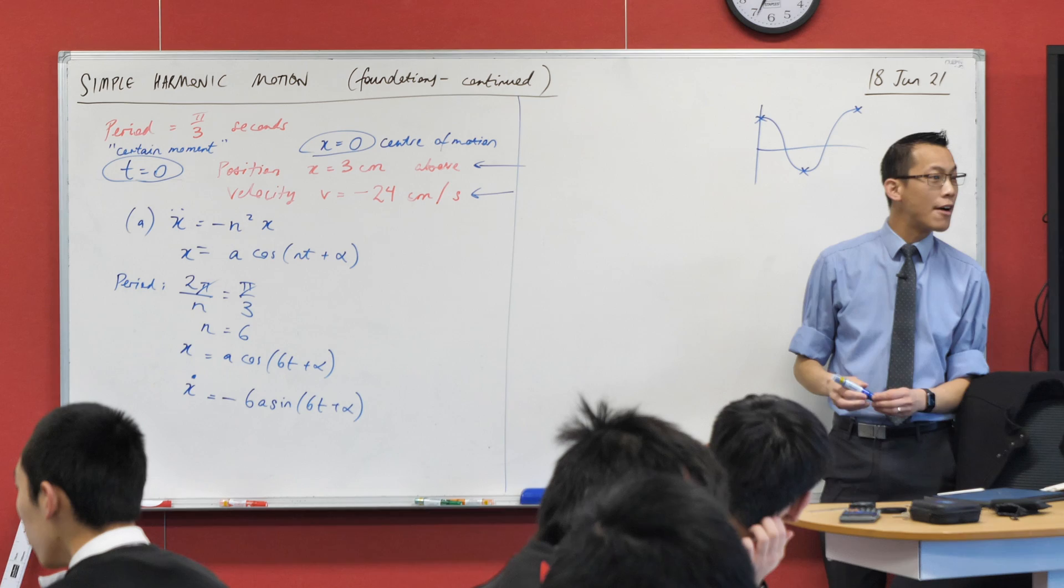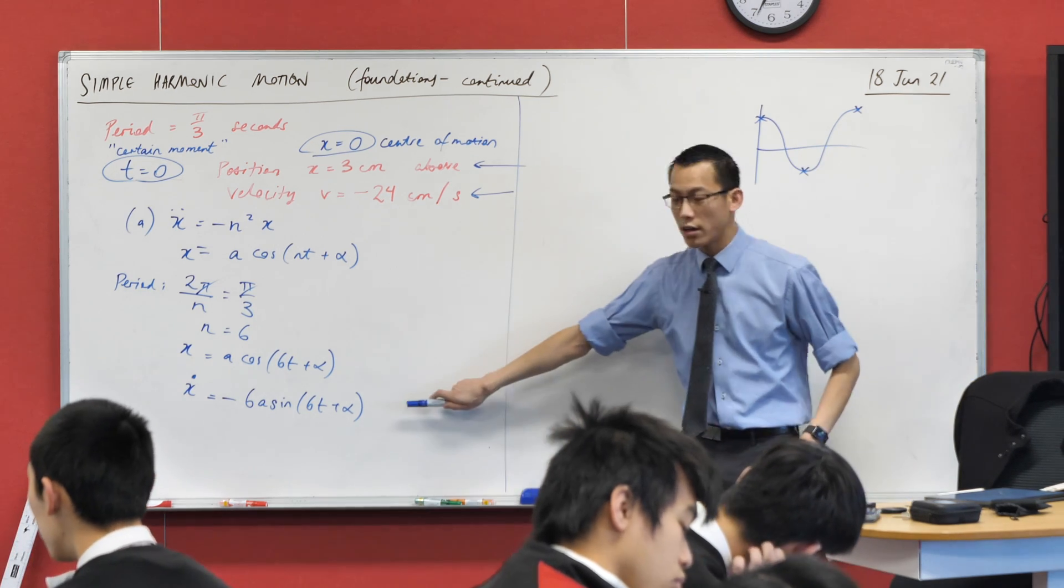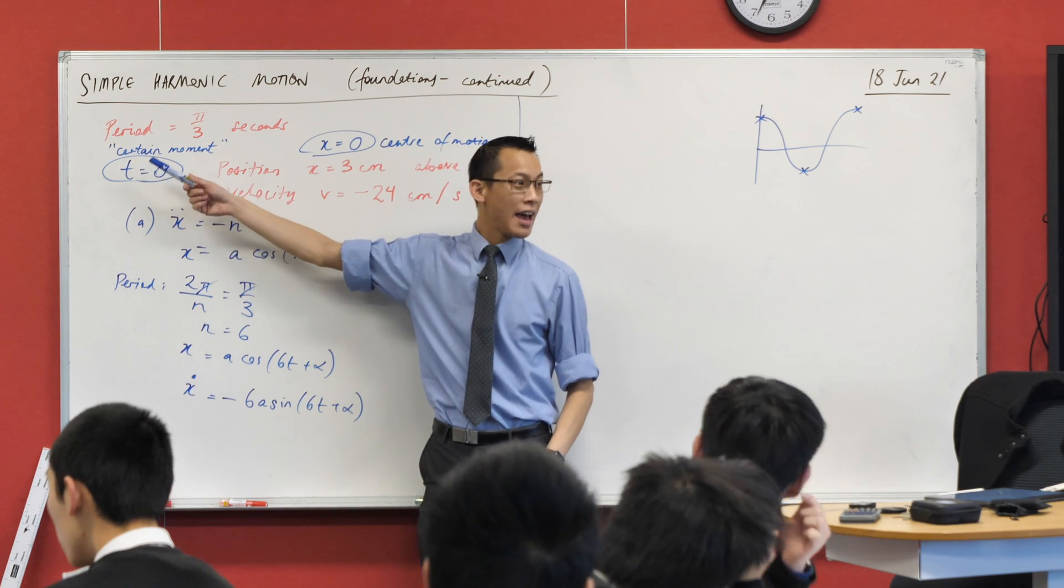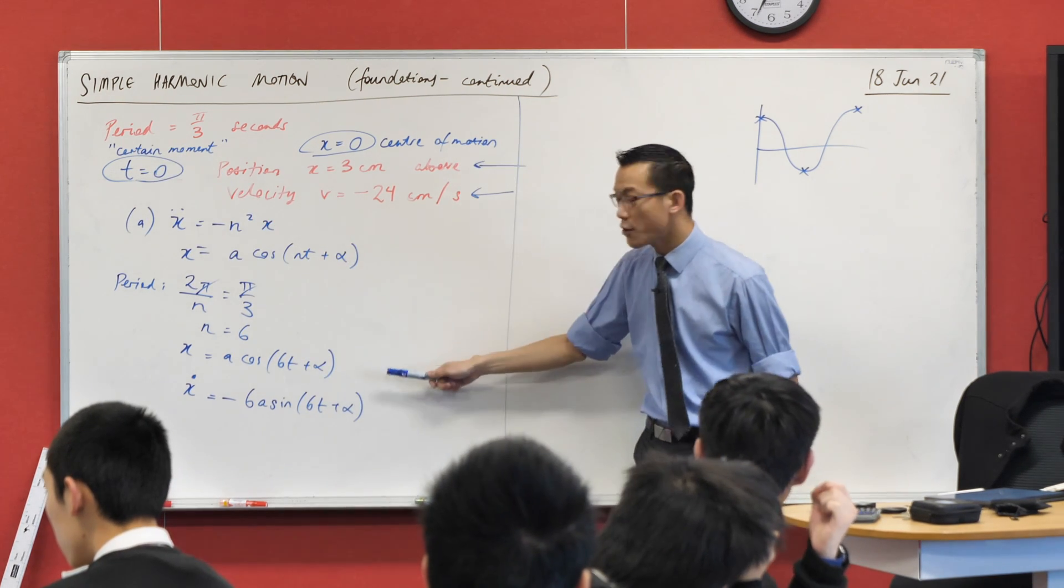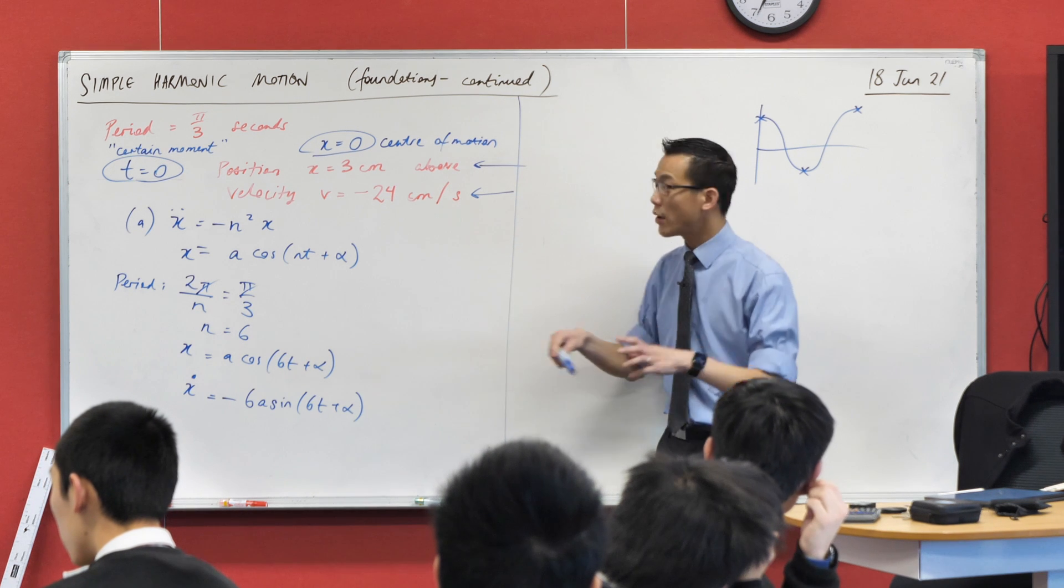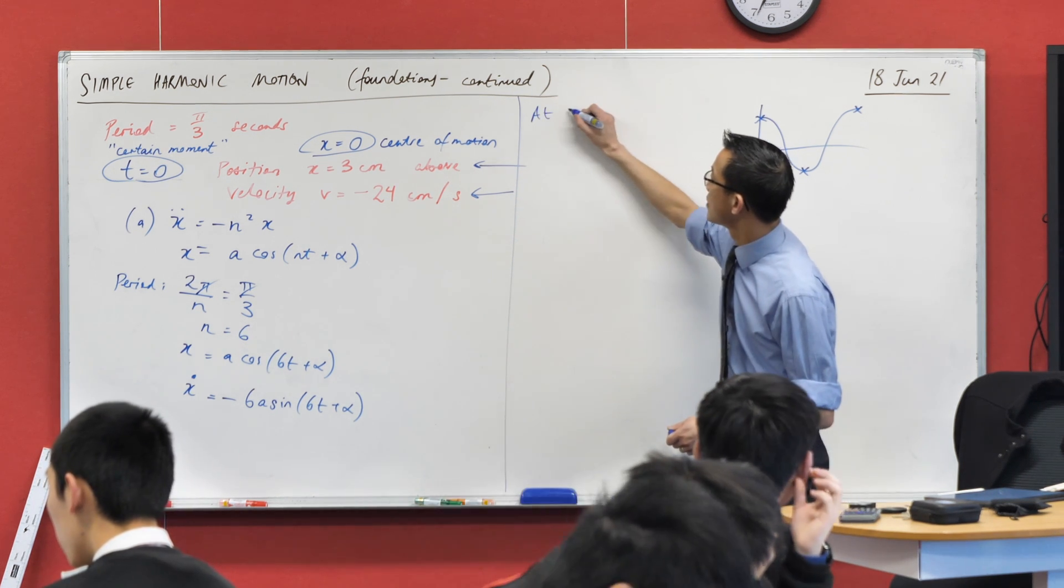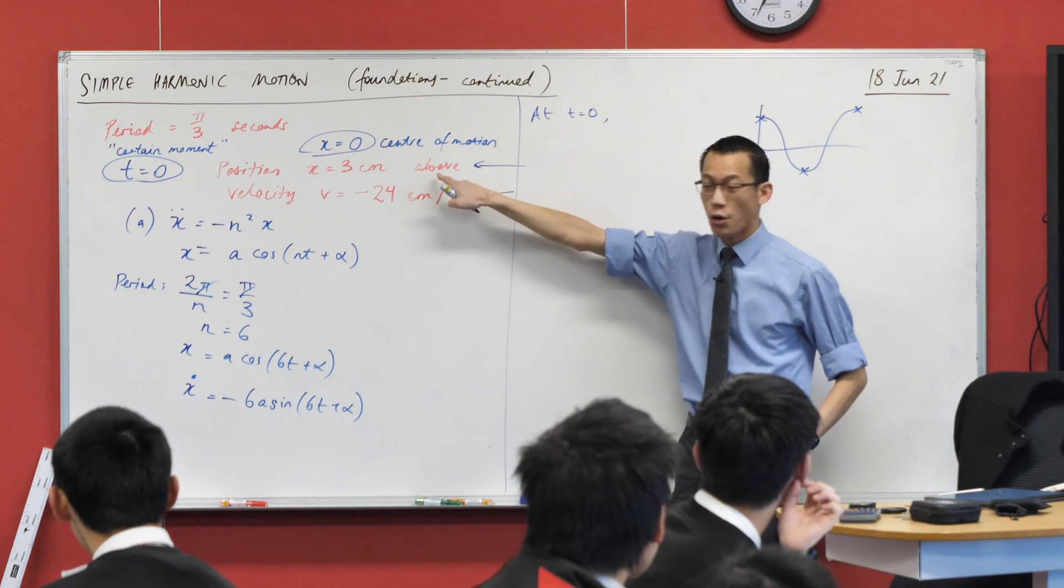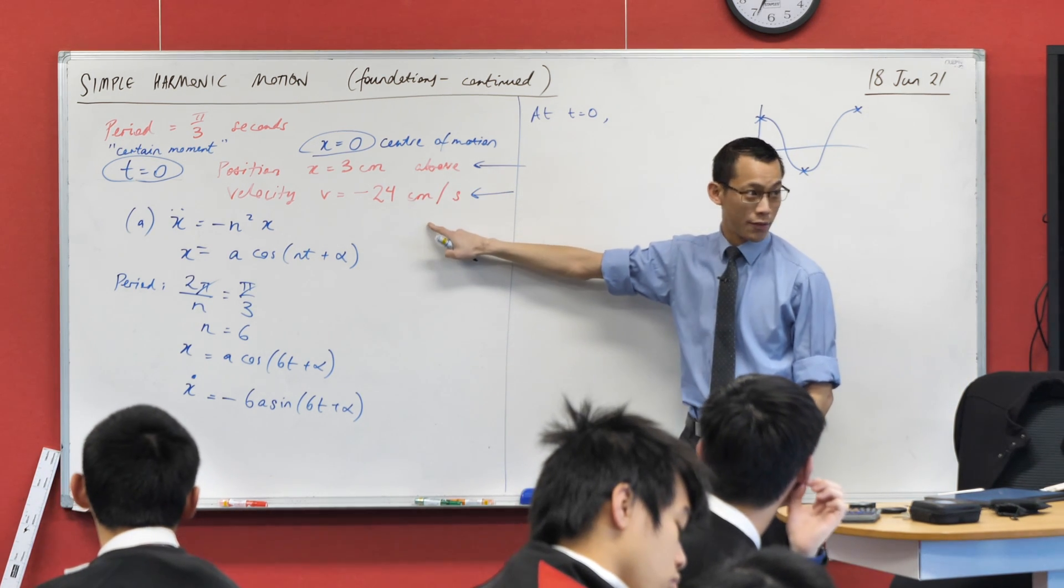Need a bit of space here. I've got a displacement equation. I've got a velocity equation and I can say, because I defined my certain moment as t equals 0, I can go to both of these and make a substitution. I know what the position is, I know what the velocity is.